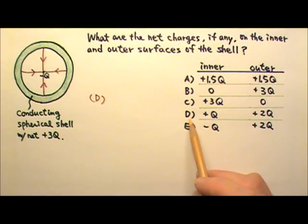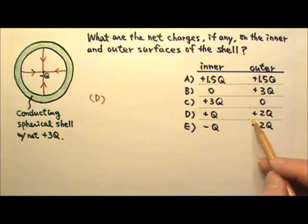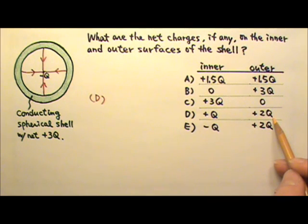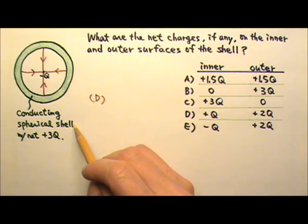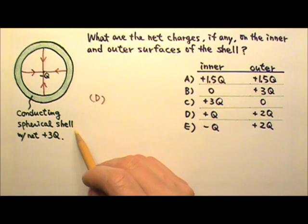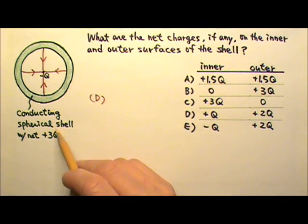For D, does it make sense for the outer surface to have a net charge of positive 2q? Yes. Because the net charge on the conducting spherical shell has to be positive 3q.